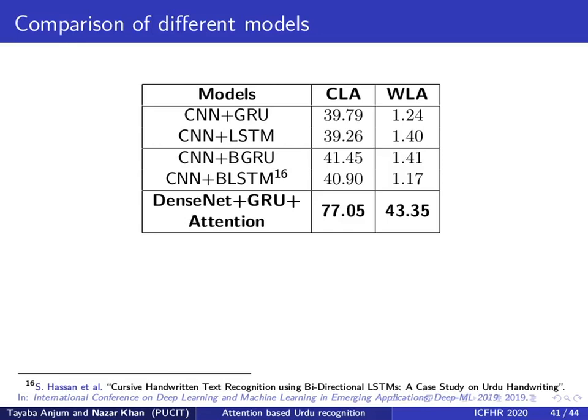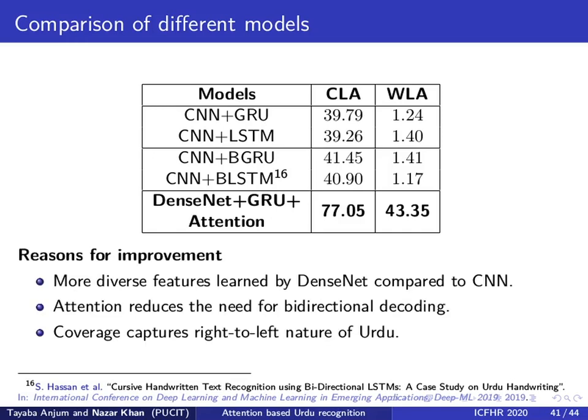We believe the reasons for such drastic improvement are: first, the DenseNet encoder learns more diverse features compared to the CNN model of previous approaches; second, attention reduces the need for bidirectional and multidirectional decoding; and third, the concept of coverage captures the right-to-left nature of Urdu.